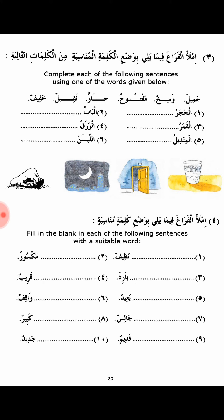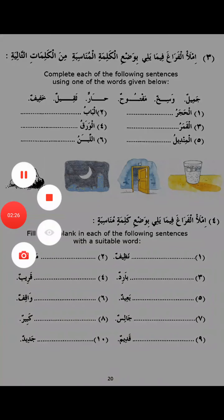The khabar words are: nazifun, baridun, baeedun, jalisun, qadeemun, maksurun, qareebun, waqifun, kabirun, and jadeedun. You all know these words, so it's up to you to do the exercise — writing, voice recording, and meaning as well. For the second exercise, choose any mubtada that you feel is correct, and it will be corrected for you inshallah. Jazakallah khair.